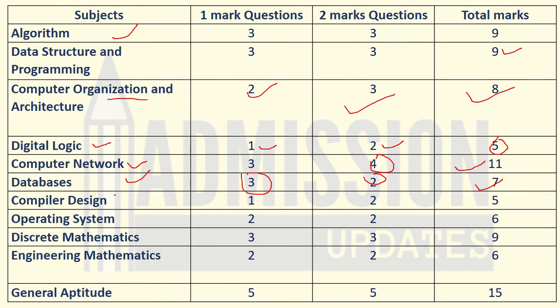For Compiler Design, one one-mark question and two two-mark questions were asked, totaling five marks. For Operating Systems, two one-mark questions and two two-mark questions were asked, totaling six marks from this chapter.